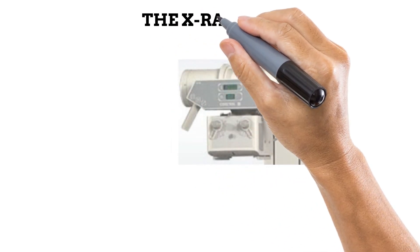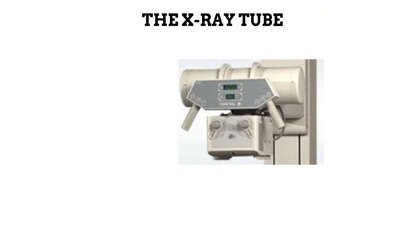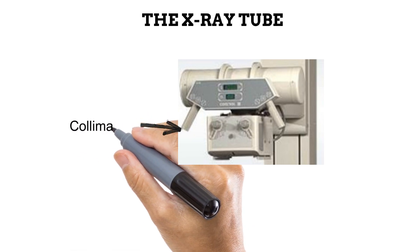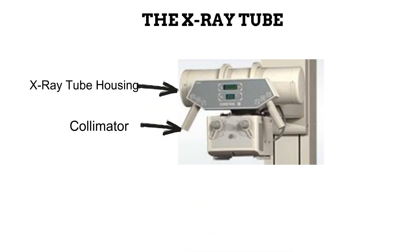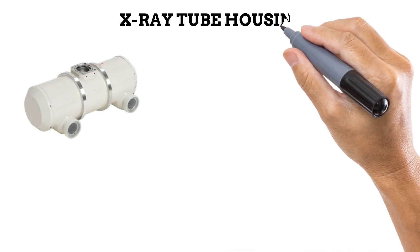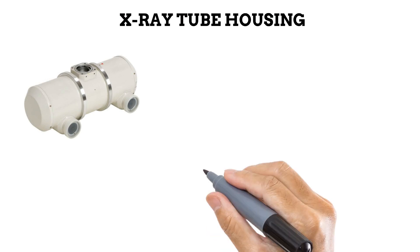In the previous video, we pointed out that the X-ray tube is responsible for X-ray photon production. Let us start out by clearing up a fairly common misunderstanding. You might have at some point heard this piece of equipment being referred to as the X-ray tube. While the X-ray tube is a part of this structure, it is not very accurate to refer to the whole thing as the X-ray tube. The box-like structure on the lower part of the equipment is the collimator, which we'll learn about in future. Meanwhile, the X-ray tube itself is contained within that cylindrical housing.